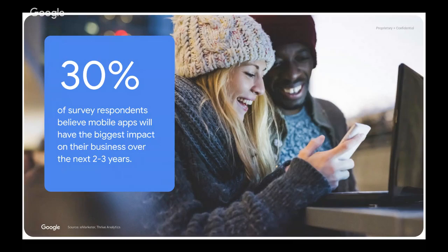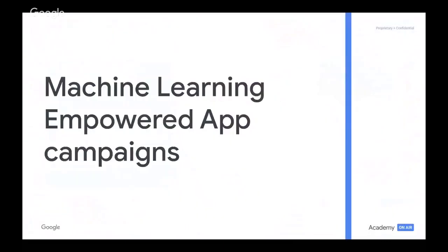And many businesses already do. In a study carried out by eMarketer, 30% of survey respondents believe mobile apps will have the biggest impact on their business over the next two to three years. So now that we all understand the significant opportunity of apps, let's dive into the actual advertising solutions. Let's start with how machine learning has empowered app campaigns.